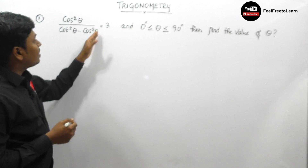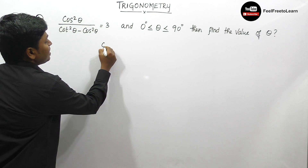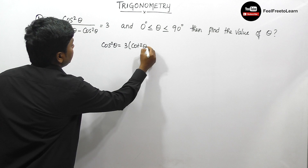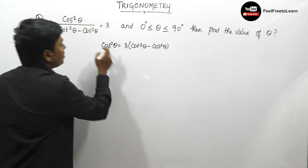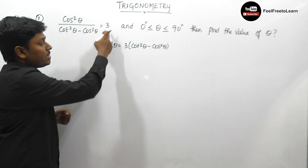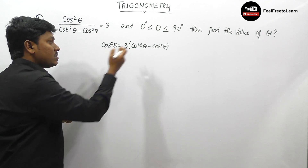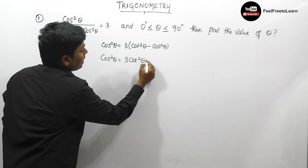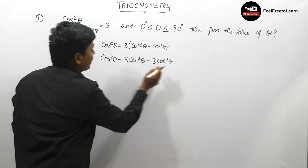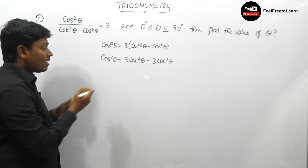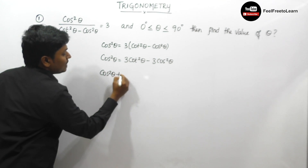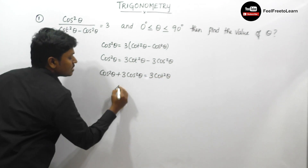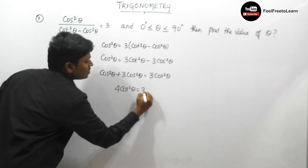This expression cos²θ divided by (cot²θ minus cos²θ) equals 3 can be rewritten by multiplying the denominator into 3: cos²θ equals 3·cot²θ minus 3·cos²θ. Rearranging, cos²θ plus 3·cos²θ equals 3·cot²θ, so 4·cos²θ equals 3·cot²θ.